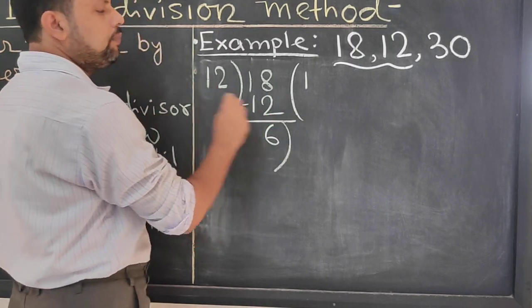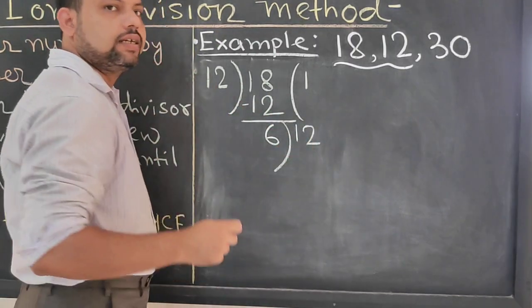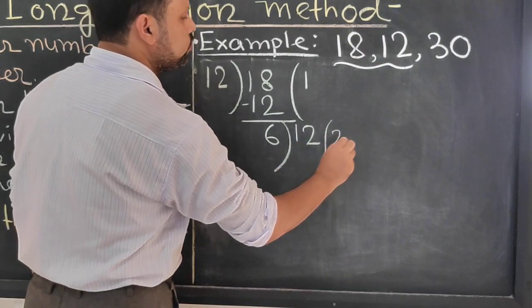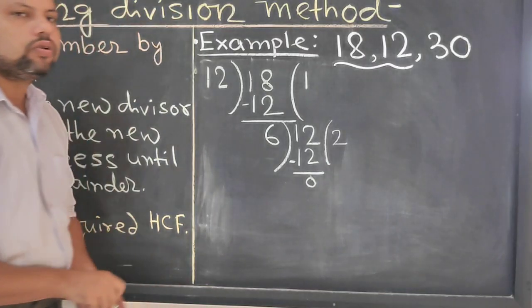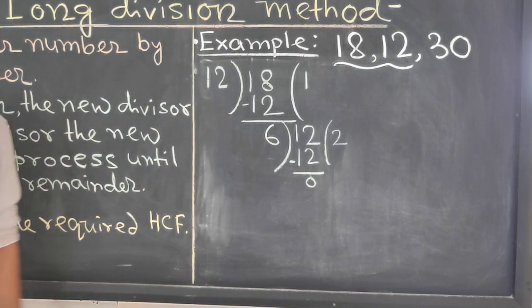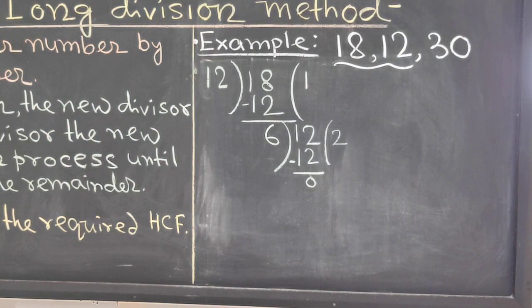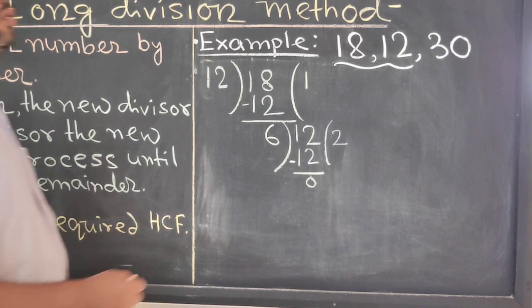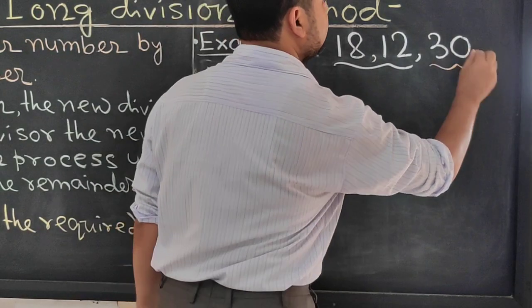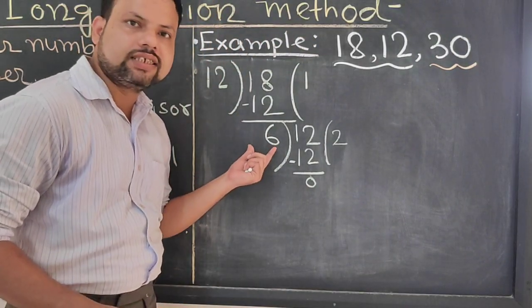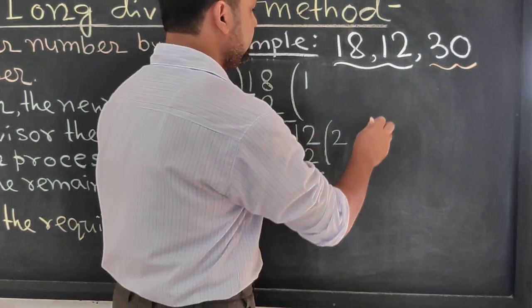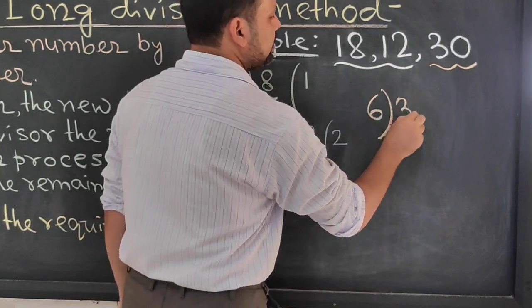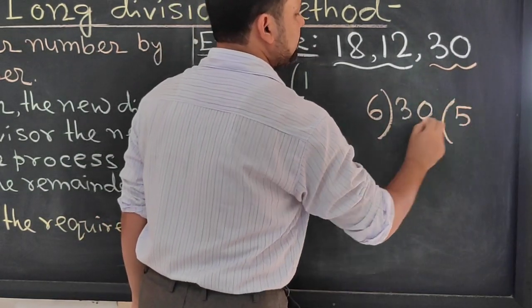From here we will get 6 as the HCF. But more number there. You can't forget about 30. So with this HCF, we have to divide this remaining number. So 6 and 30.